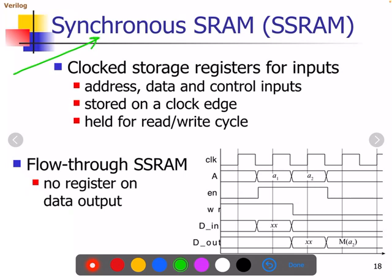Similarly, there is something called synchronous SRAM. Synchronous RAM contains a clock signal, so all operations are in synchronous with the clock signal. Registers are used for address, data, and control inputs. Each operation happens at the clock edge. You can notice that there is an address available, enable is made active, write operation is enabled, and data is available — so data storage happens.